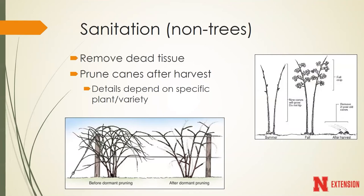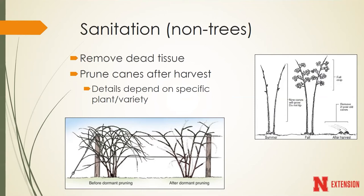For non-tree fruits, sanitation is relatively easy, whether it's brambles, strawberries, or grapes. The key thing is making sure you are removing that dead tissue after harvest and pruning the canes as well. How we prune those canes is heavily dependent on the specific variety - whether it's a primocane plant would be different than the pruning we'd do for brambles that produce fruit in the spring.